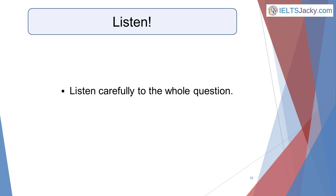The third common reason people lose marks in part three is that they don't listen carefully to the question. It's so easy to hear just one or two key words and think you know what's being asked — very often you'll be wrong, especially with these more abstract questions. In the exam that's a serious mistake because you probably won't answer the question appropriately and this will lose you marks. So listen carefully to the whole question before answering.